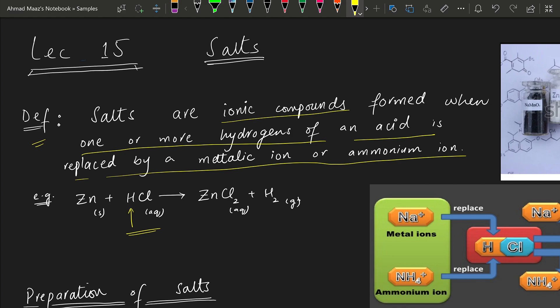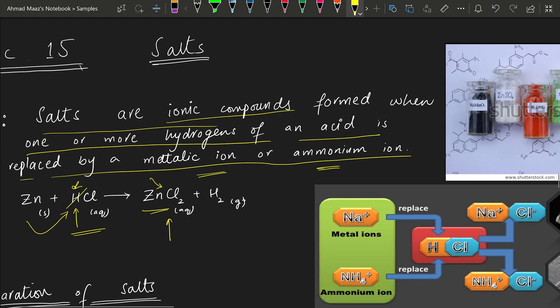When one or more hydrogens of an acid are replaced — in this case we only have one hydrogen in our acid — if this hydrogen is replaced by a metal, for example zinc, then ZnCl₂ will form. In place of hydrogen, Zn is attached, so this is a salt. A salt is formed when hydrogen of an acid is replaced by a metallic ion or an ammonium ion.